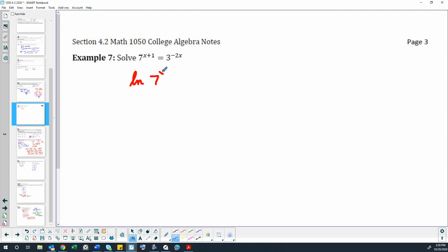So I have the natural log of 7 to the (x + 1) power equals the natural log of 3 to the negative 2x power. I'm going to use the power property to move the exponents to the front as products. That's why I call it the product property, because we're multiplying the logarithms times those exponents.